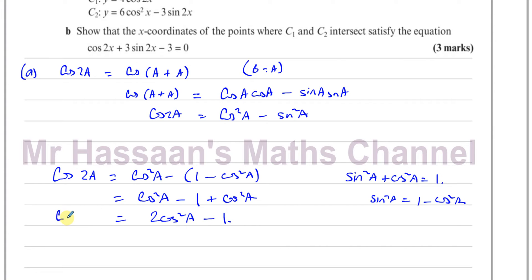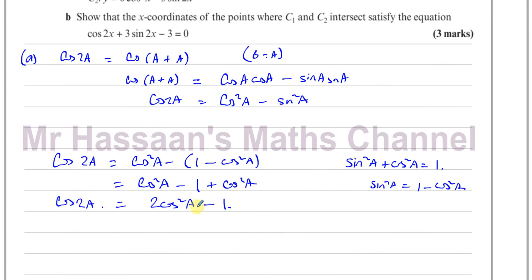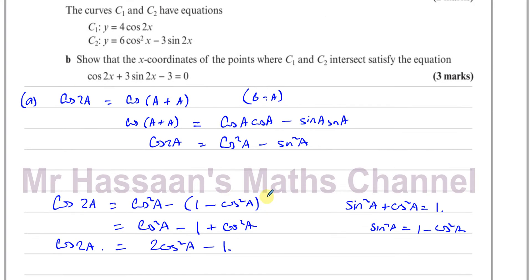That's the answer to Part A — a simple use of the double angle formula: replace B with A, then replace sin²A with 1 − cos²A. If the question had said show cos2A = 1 − 2sin²A, we would instead replace cos²A with 1 − sin²A to get 1 − 2sin²A. But the question asked for it in terms of cosine, so there's our answer.